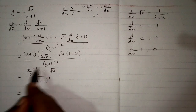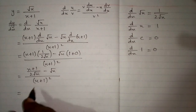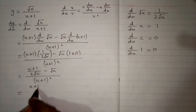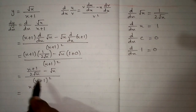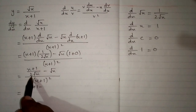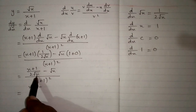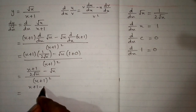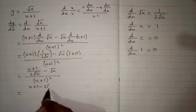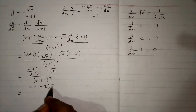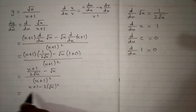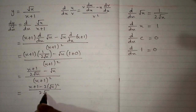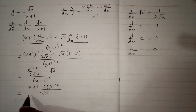Now we can simplify the fraction in the numerator. We have x plus 1 minus, and we will multiply 2 square root of x by square root of x, giving 2 times square root of x squared, upon 2 times square root of x.